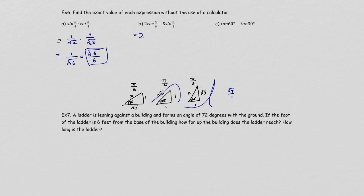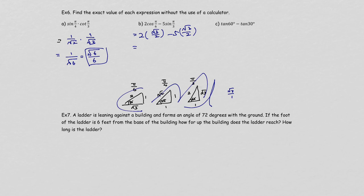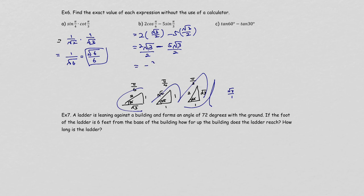For the next part: 2 times cosine of pi over 6 minus 5 times sine of pi over 3. Cosine of pi over 6 is square root of 3 over 2, and sine of pi over 3 is also square root of 3 over 2. Keeping the same denominator before subtracting: you get 2 times square root of 3 over 2 minus 5 times square root of 3 over 2. The numerator gives 2 minus 5 times square root of 3, which is negative 3 square root of 3, over 2.